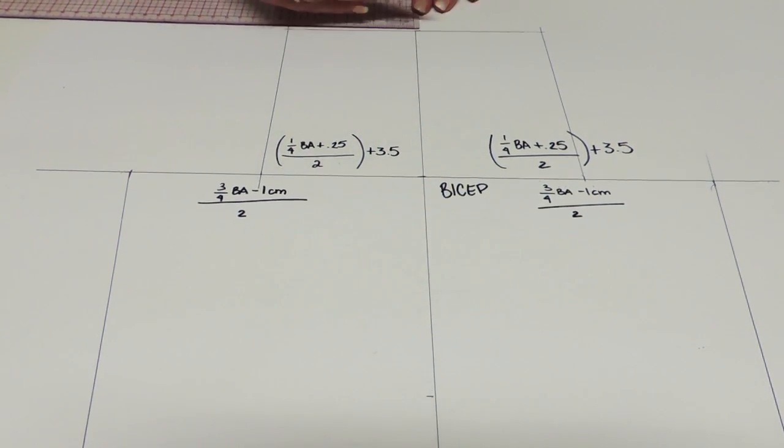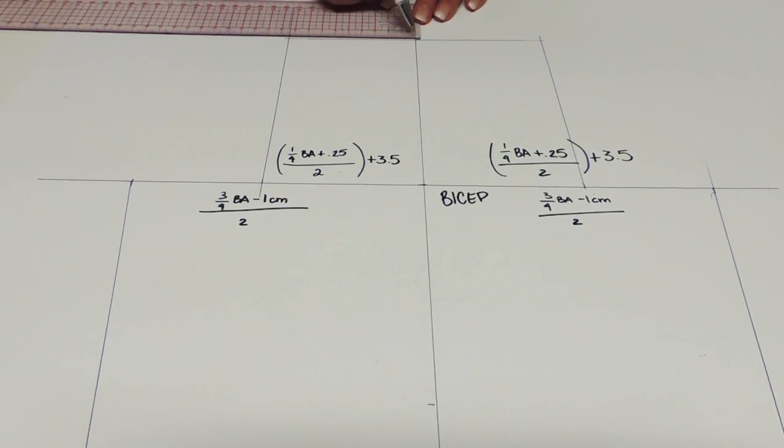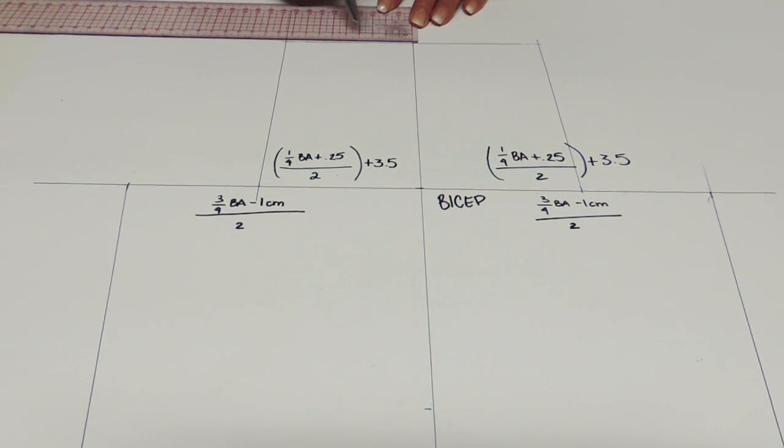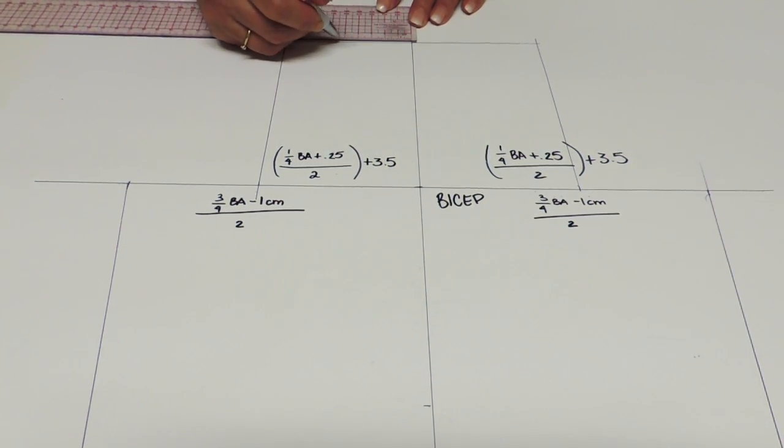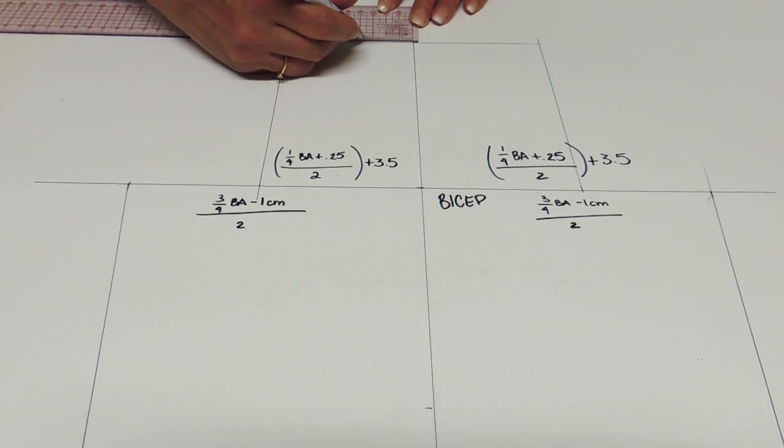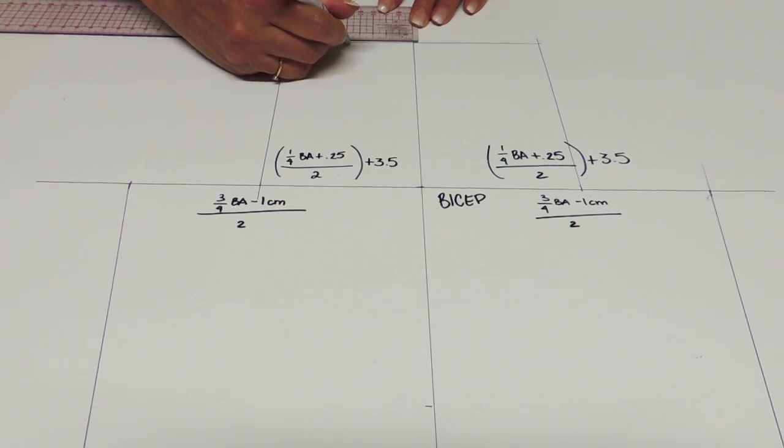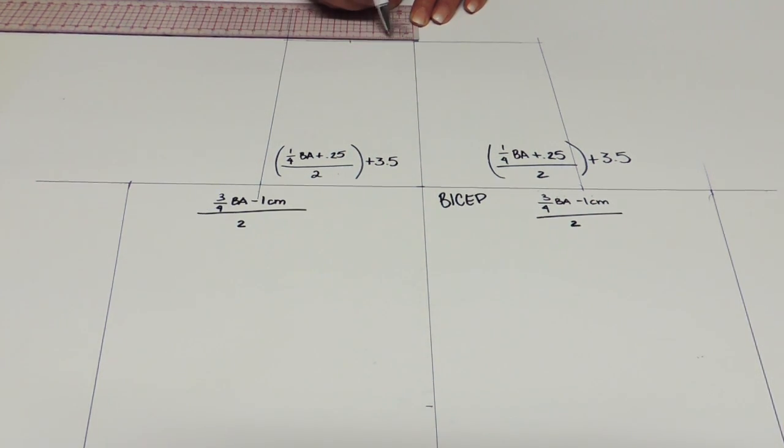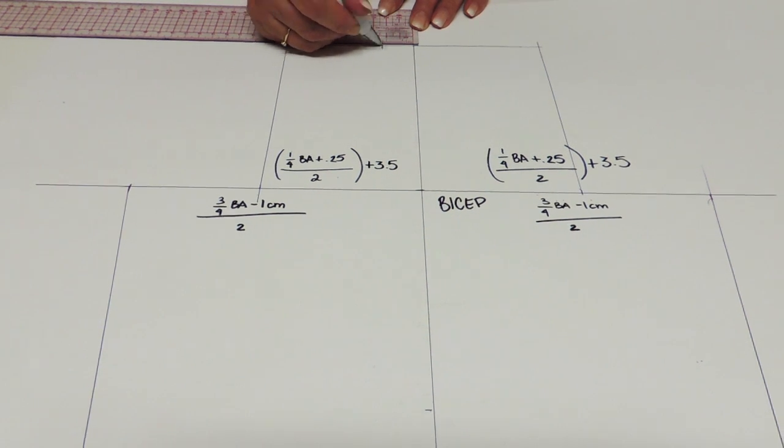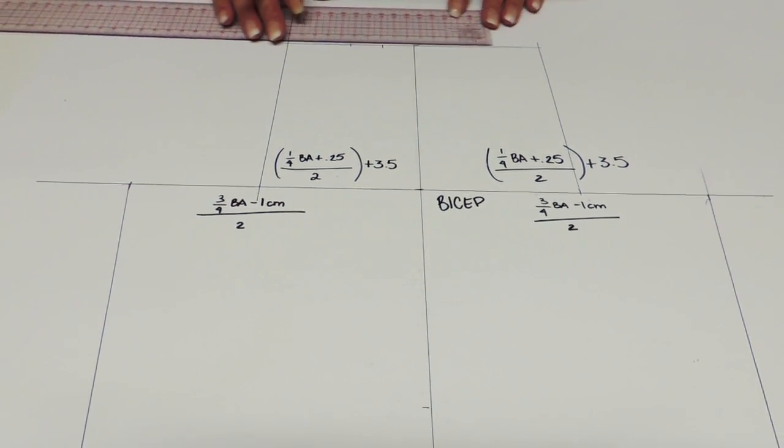Now on the sleeve head you're going to divide each side by two. So 9.4 is 4.7 and you're going to divide again in two. Same thing on both sides.